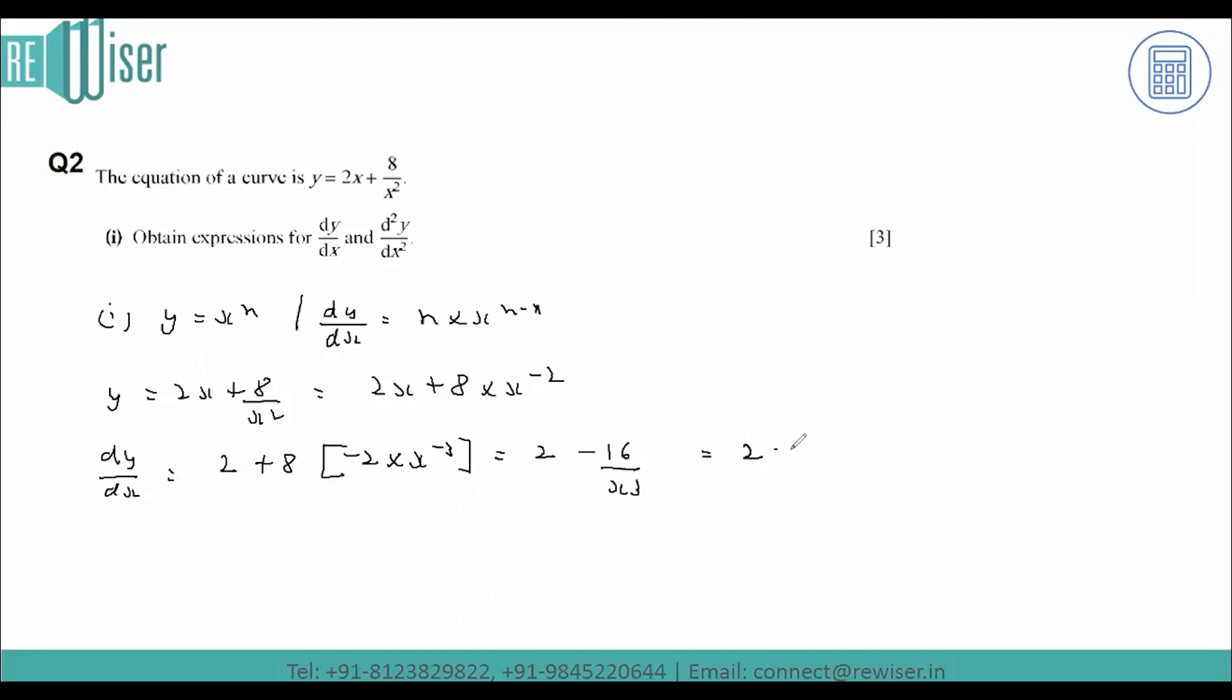Similarly, we can rewrite this as 2 minus 16 times x to the power minus 3.